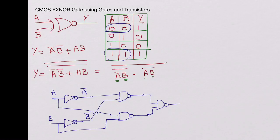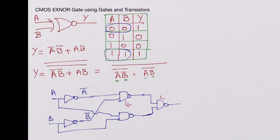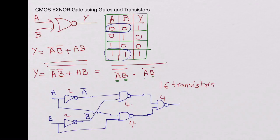Looking at the transistor count for this gate-level approach: each NAND gate uses 4 transistors (three NAND gates = 12), and each inverter uses 2 transistors (two inverters = 4), giving a total of 16 transistors.